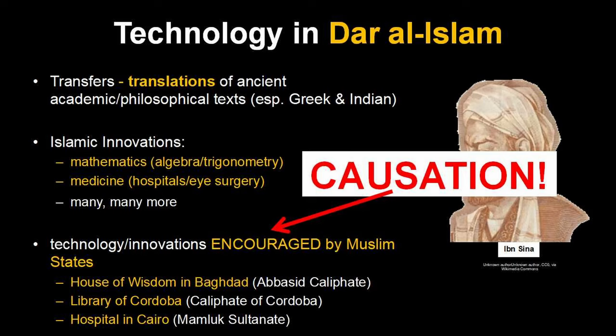Speaking of the political role, let's take a look at Dar al-Islam again. States like the Abbasid Caliphate and those Turkic states are actively encouraging technological innovations, largely by paying people to do research and building the places for them to do it — like the House of Wisdom built by the Abbasid Caliphate. I think you guys are ready for some real life AP exam examples.